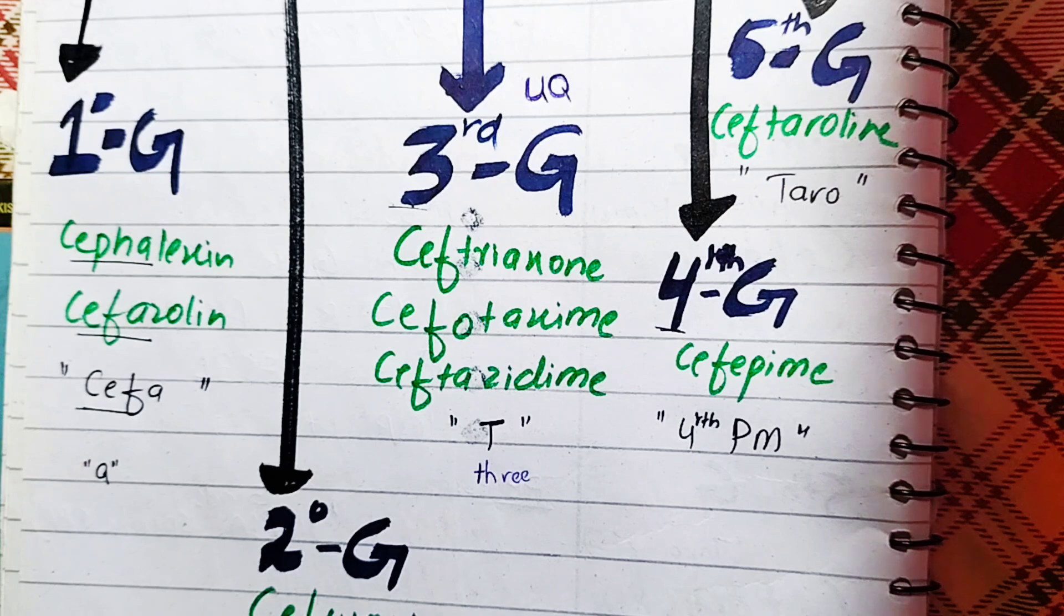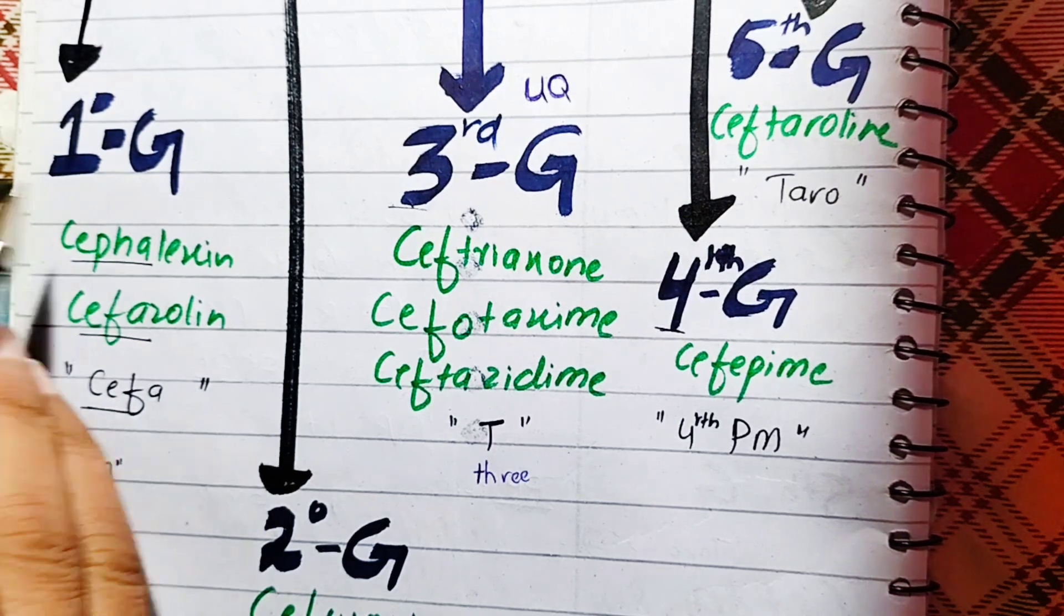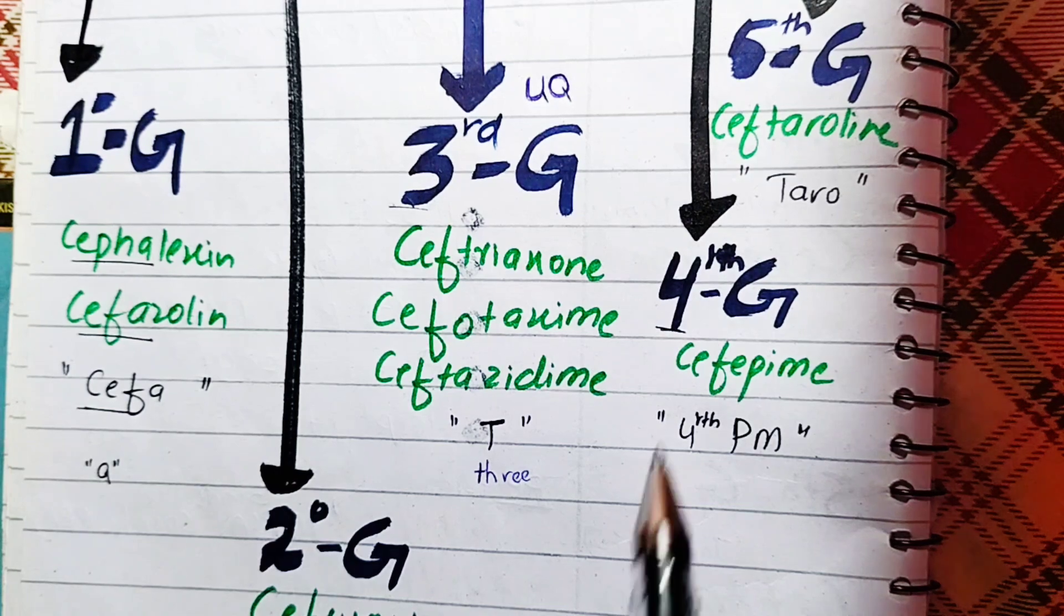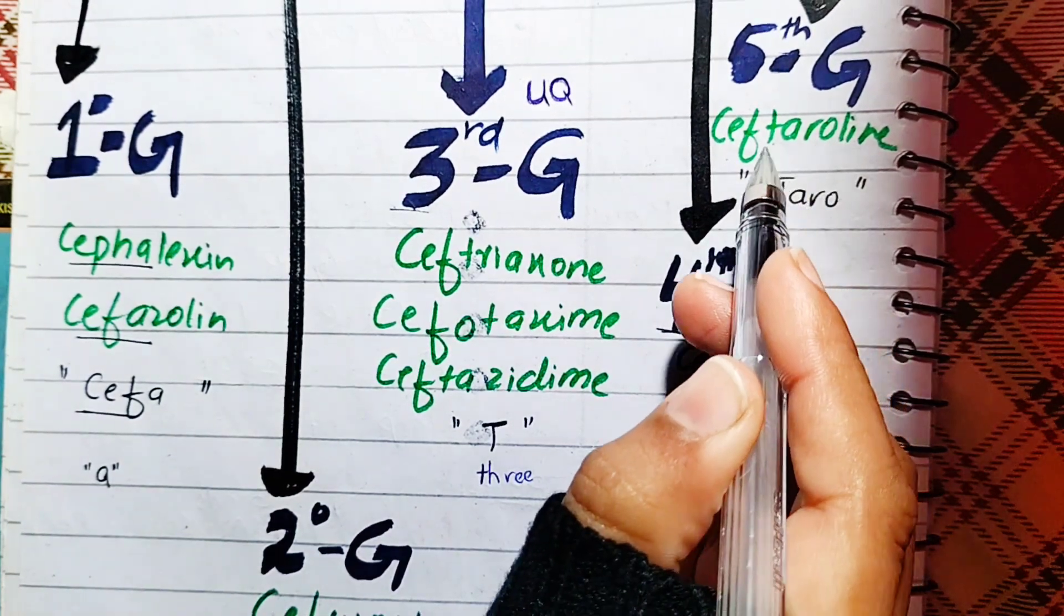We will be able to take a look at the next group. First generation, second generation, third generation, fourth and fifth. This is the 5th group.